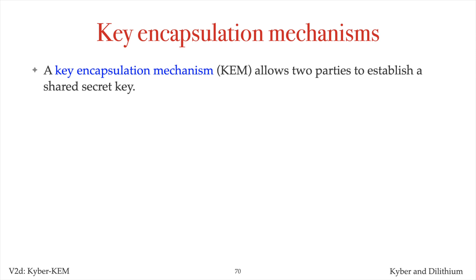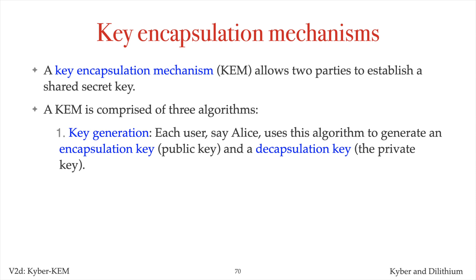A key encapsulation mechanism, or KEM, is a key establishment protocol that allows two parties to establish a shared secret key. A KEM is comprised of three algorithms. A key generation algorithm that Alice uses to generate an encapsulation key and a corresponding decapsulation key. The encapsulation key is Alice's public key, whereas the decapsulation key is her private key.